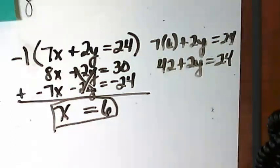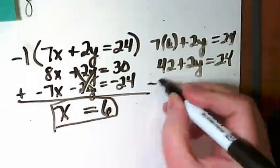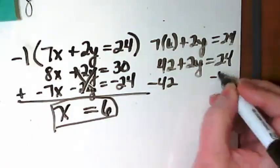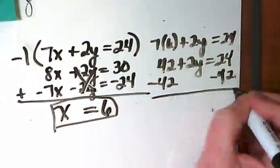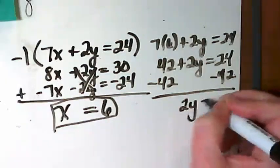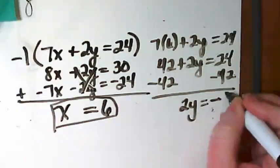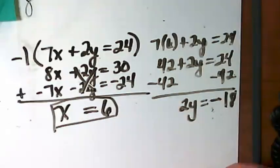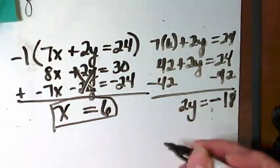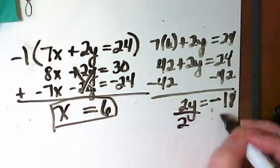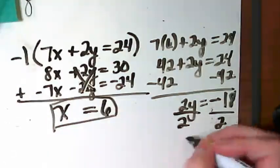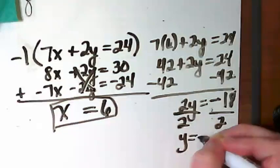Now I'm going to eliminate that 42 by subtracting it from both sides. I get 2y is equal to negative 18. Divide both sides by 2, and I get y is equal to negative 9.